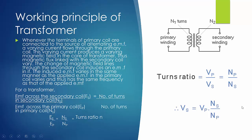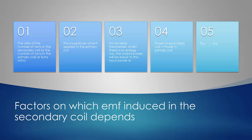The formula is Ns/Np (turns ratio). The voltage induced in the secondary depends upon the voltage of the primary and the turns ratio.